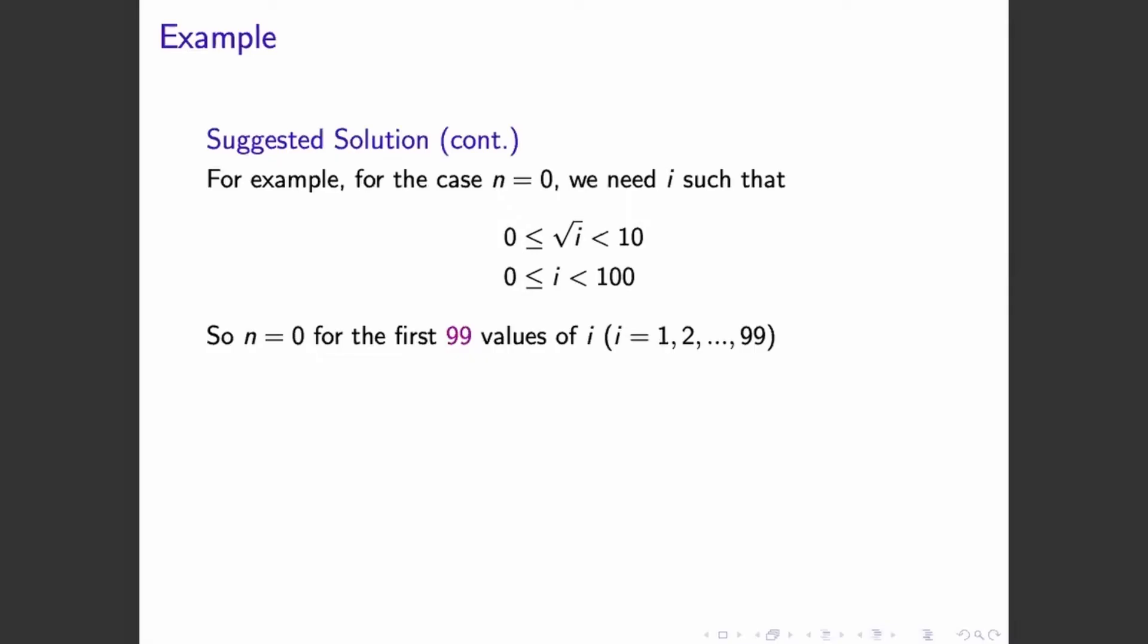So we can do the same for n equals 1. We need our i to be at least 100, but less than 400. So the values of i that will work for this case is 100, 101, all the way to 399. So n will be equal to 1 for 300 values of i.